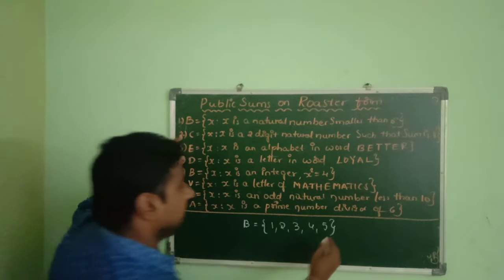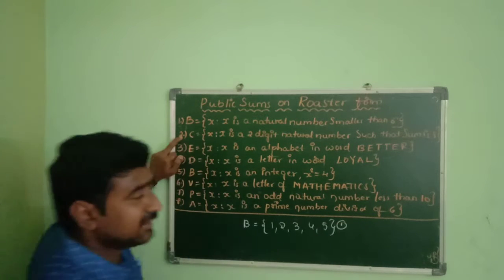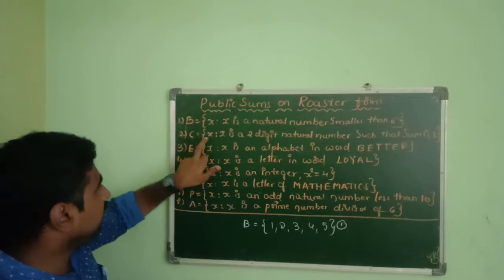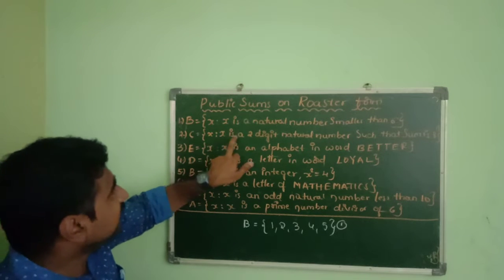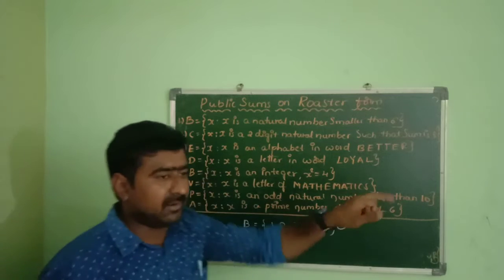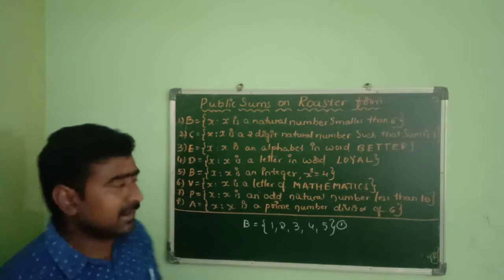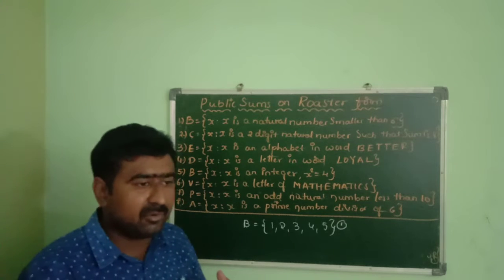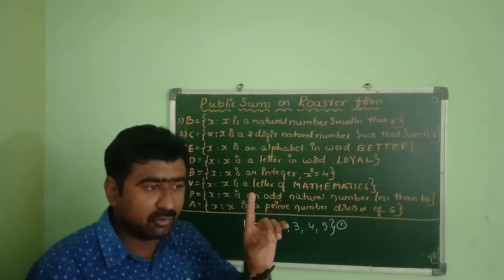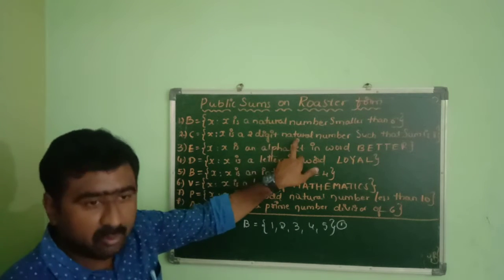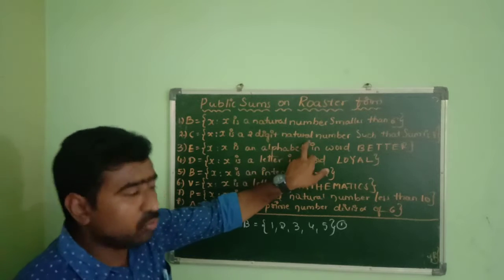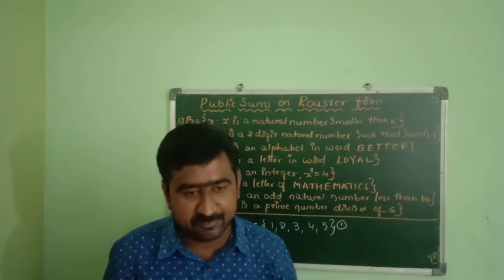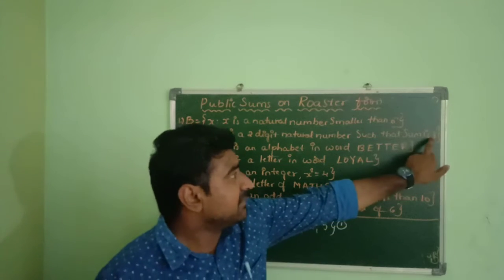The second sum is Set C. We have Set C with x such that x is a 2-digit number. The 2-digit number has a digit sum equal to 8. For example, 26: 2 plus 6 equals 8. And 44: 4 plus 4 equals 8. We observe the condition that x is a 2-digit number whose digit sum is 8.